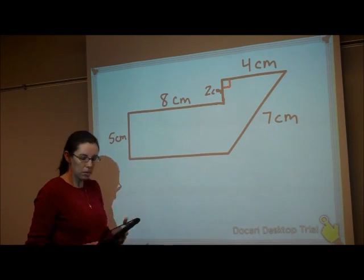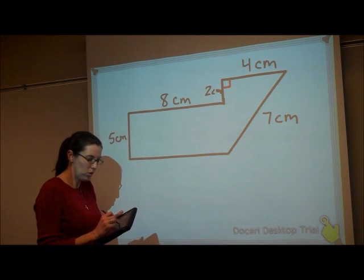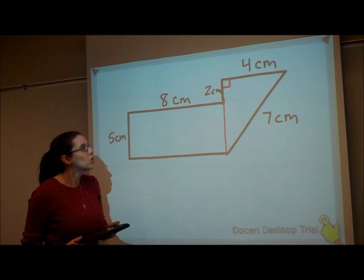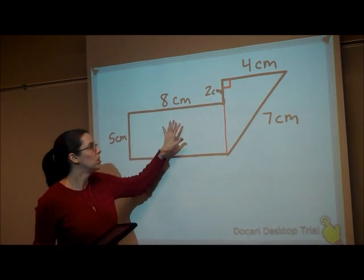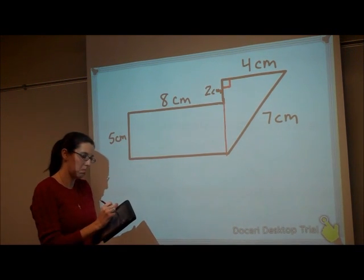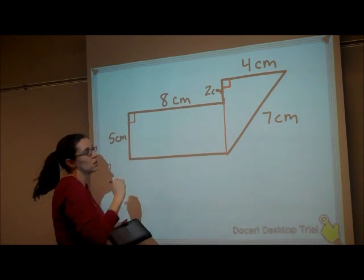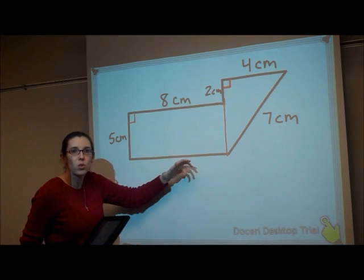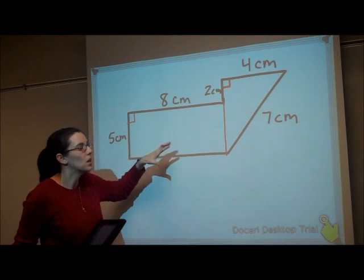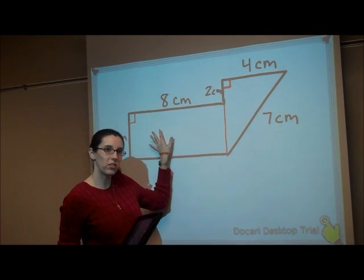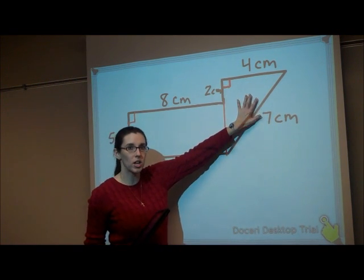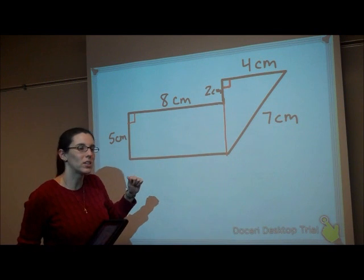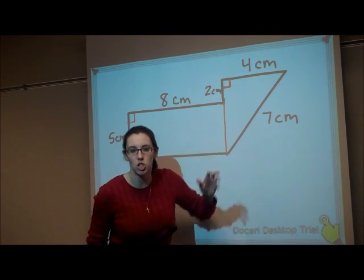So this one, what's probably the most obvious to do is to continue this line down so that we have a rectangle, and here, this is a rectangle and a triangle. We know the areas of each of these. So if we find the area of my rectangle, the area of this triangle, we can add those areas together, and that would give us the area of this entire shape.